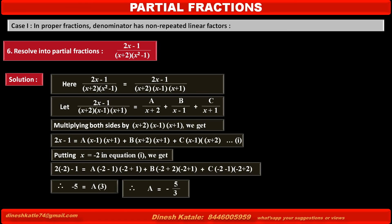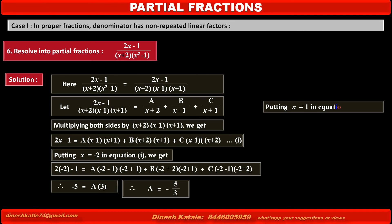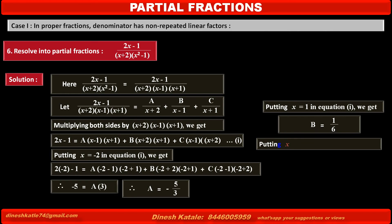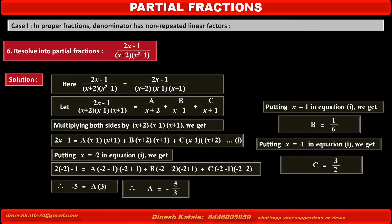To find the value of B, we eliminate terms of A and C by putting x equal to 1 in equation 1, giving B equal to 1 upon 6. To find the value of C, we eliminate terms of A and B by putting x equal to minus 1 in equation 1, giving C equal to 3 upon 2.